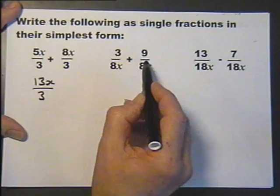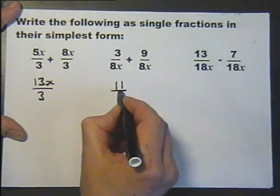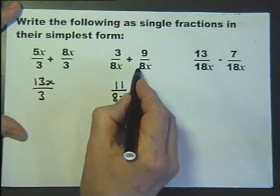3 over 8x plus 9 over 8x will give me a total of 11 over 8x, because the denominators are the same.